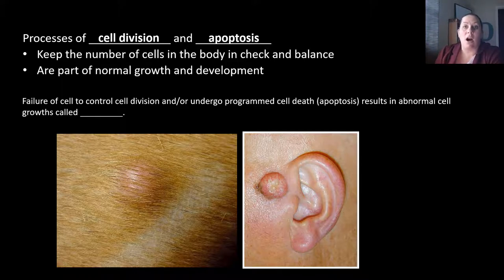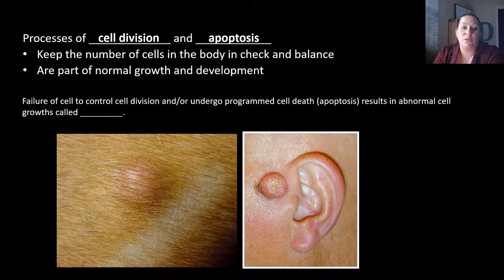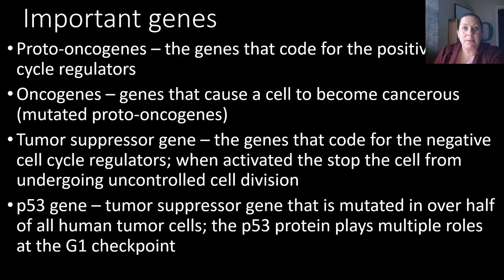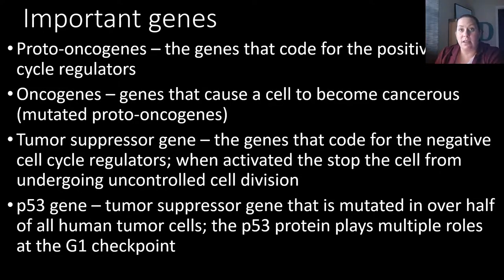If this check and balance is not happening like it should, we see problems. They are part of normal growth and development; but failure for cells to control division — they just keep dividing without apoptosis — causes abnormal growth, creating what we call tumors. There are important genes involved in this process. Proto-oncogenes are genes that code for positive cell cycle regulators — they help tell the cell whether it needs to divide or not. Oncogenes are mutated proto-oncogenes, which causes the genes of the cell to become cancerous, telling the cells to divide uncontrollably.